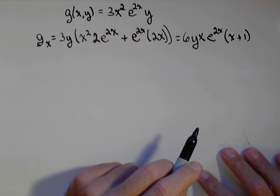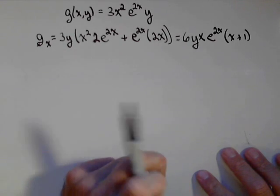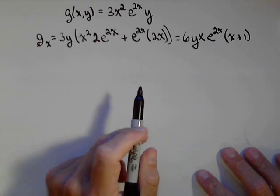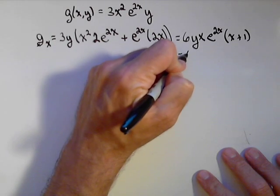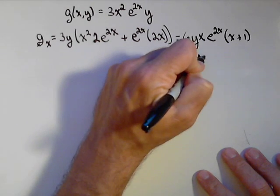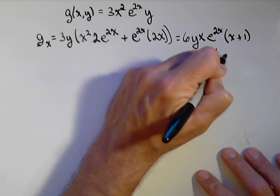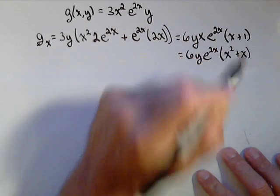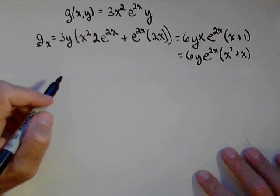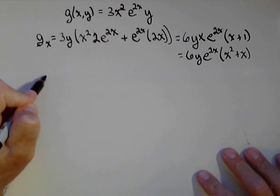Now we're going to have to take the partial of this, the second order partial with respect to x. So, it might be easier to multiply this x back through and just leave it as 6y e^(2x) (x² + x). You'll see why when we get to it. Save us a little bit of work on our product rule.